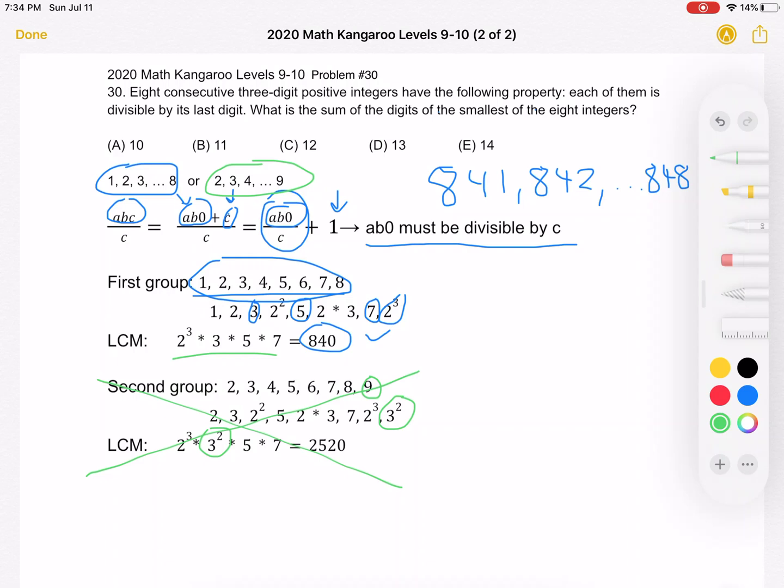We know that we definitely have the numbers 1 through 8 as our C. Out of all of these numbers, this set of 8 consecutive numbers, what is the sum of the digits of the smallest? The smallest is 841. The sum of the digits is 8 plus 4 plus 1, which is equal to 13. And that is answer choice D. Thank you so much for watching, and please subscribe if you would like to see more videos.